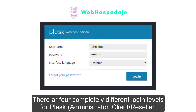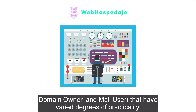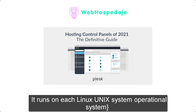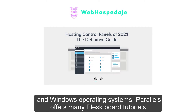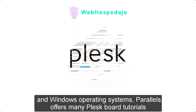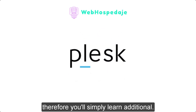There are four completely different login levels for Plesk administration: client or reseller, domain owner, and mail users, each with varied degrees of permissions. It runs on both Linux, Unix systems, and Windows operating systems. Parallels offers many Plesk tutorials so you can simply learn more.